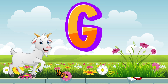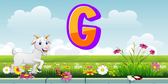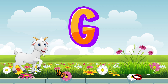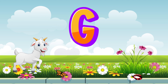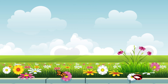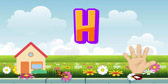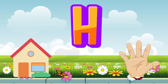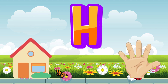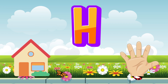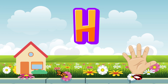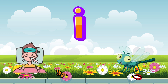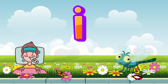G, g, goat. G is for grass. G, g, grass. H is for house. H, h, house. H is for hand. H, h, hand. I is for eel.